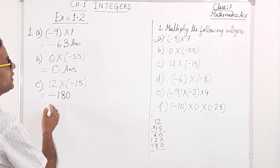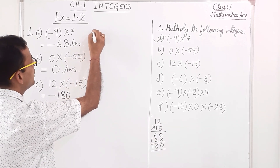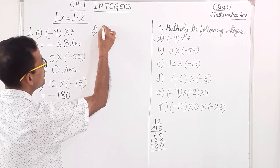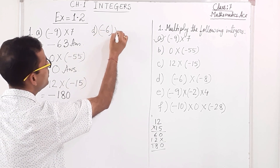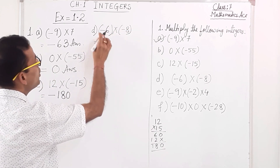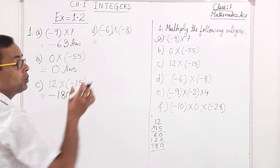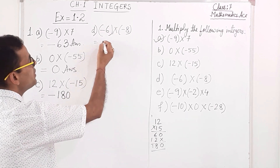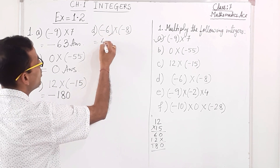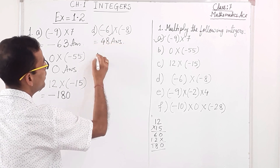Number d: minus 6 into minus 8. Both are negative — same sign. Same sign means it becomes positive. 6 times 8 is 48. So the answer is positive 48.